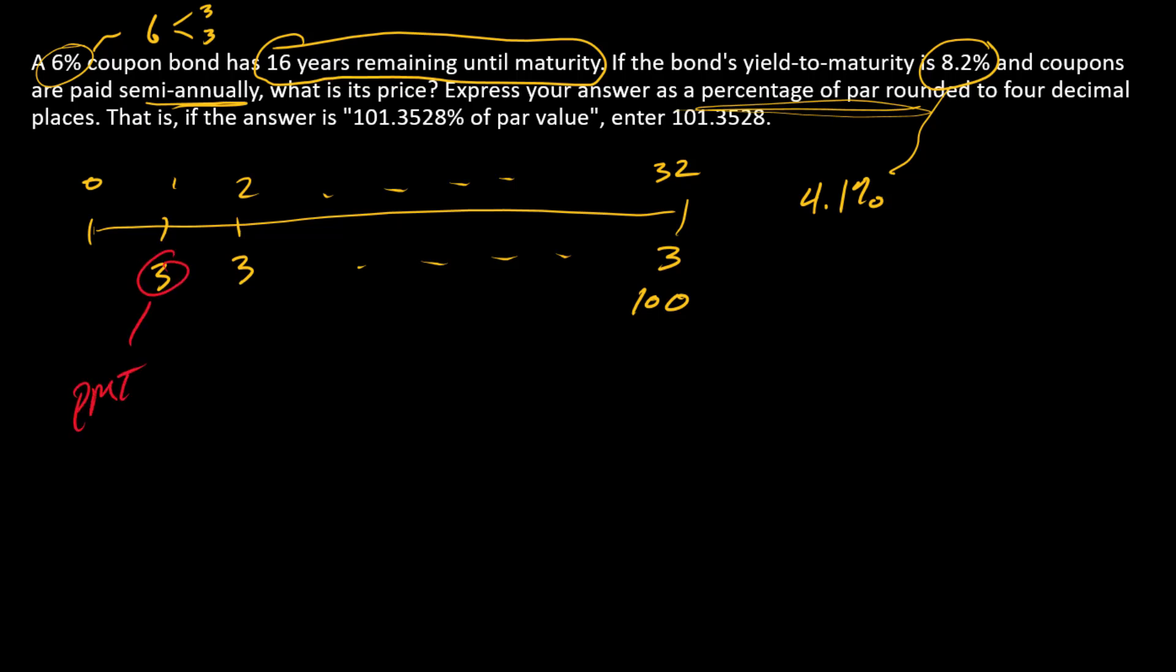Three is going to be our payment. 100 is going to be FV because that's the time in cash flow. It's incremental to the payment. 32 is N and 4.1 is I. I'm going to make my FV and my payment both positive because those are going in the same direction. And PV, that's what I'm going to find, and that I expect to be negative.